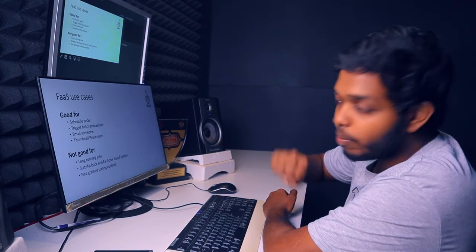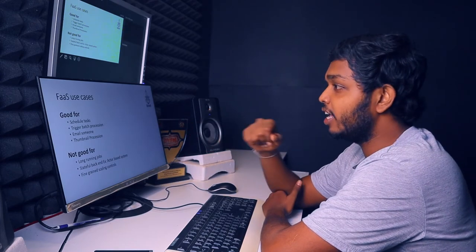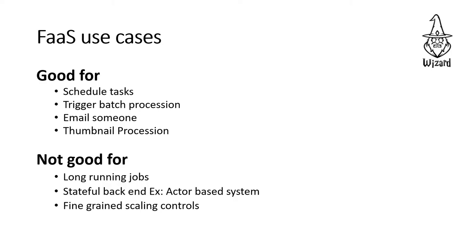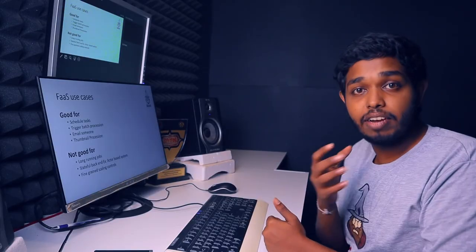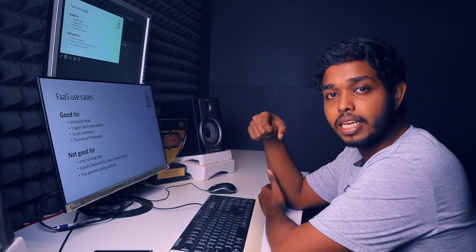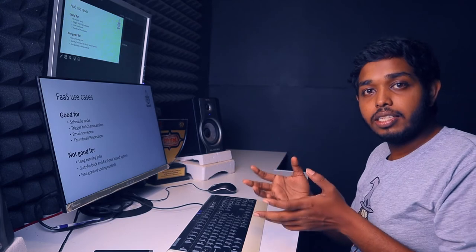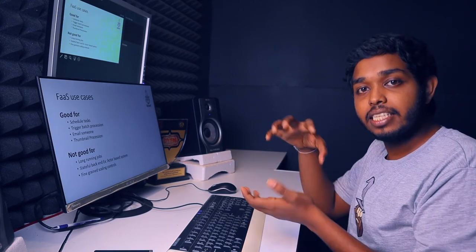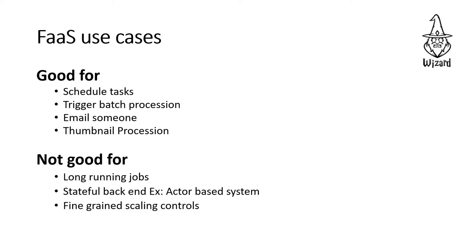If you want to use it as a developer, you can deploy the functionality of your application. You can use that as a developer on a database, or use it in email and use those processes as a developer. If you want to maintain state, you will recommend the Lambda function — you will need to maintain this state.